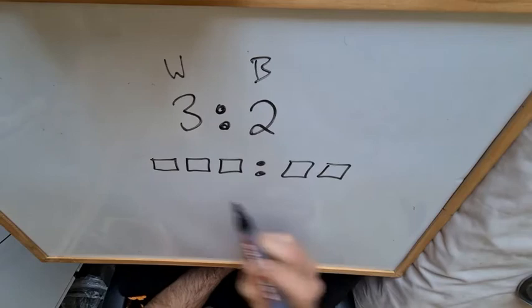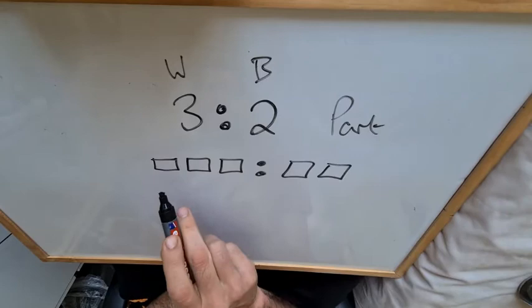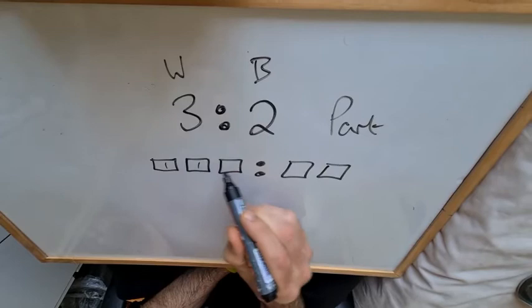Okay, so regardless of how much each part is, you'll notice that word keeps coming up, part, we use that a lot. No matter how much each part is, they are all the same. Okay, so each part could be one, like the first example we gave.